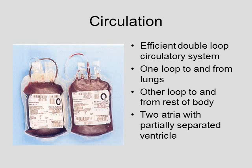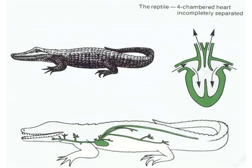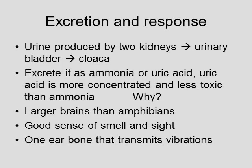Reptiles are not super active — they don't spend a lot of time running or swimming continuously; they can move rapidly for short periods but then need to rest. The partially separated ventricle makes circulation a bit more efficient with less blood mixing, but we'll see with birds and mammals that the heart and circulatory system gets even more advanced. The diagram here shows the three-chambered heart with two atria and the partially divided ventricle.